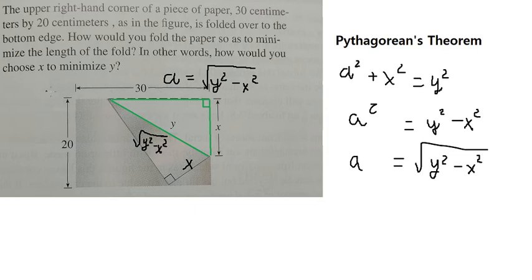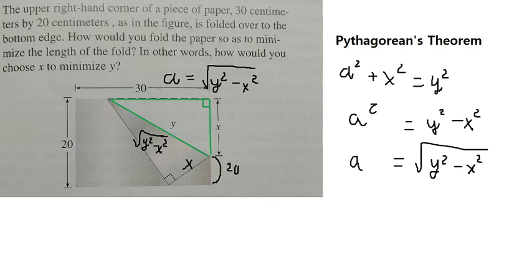Next, we have the number 20 here and we have s, so we can find this value as 20 minus s. Now we highlight the next triangle — the red triangle here.